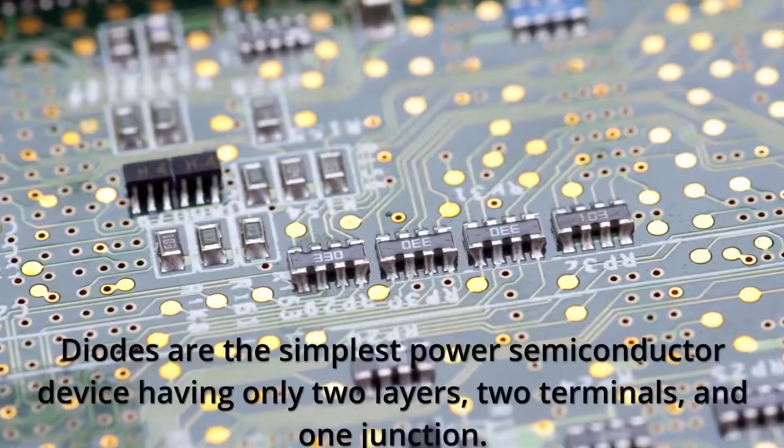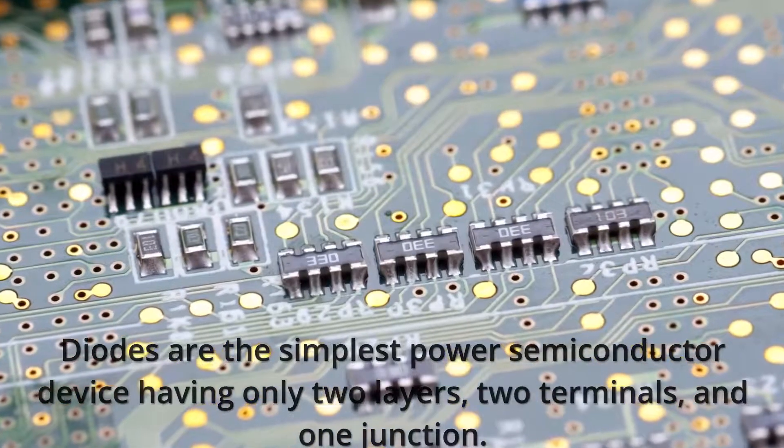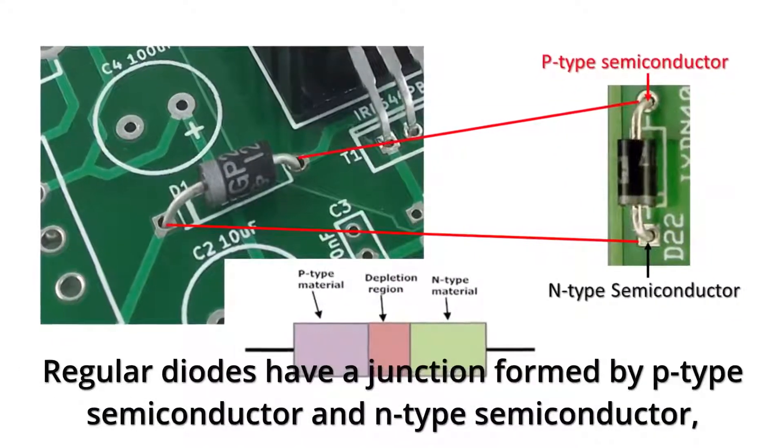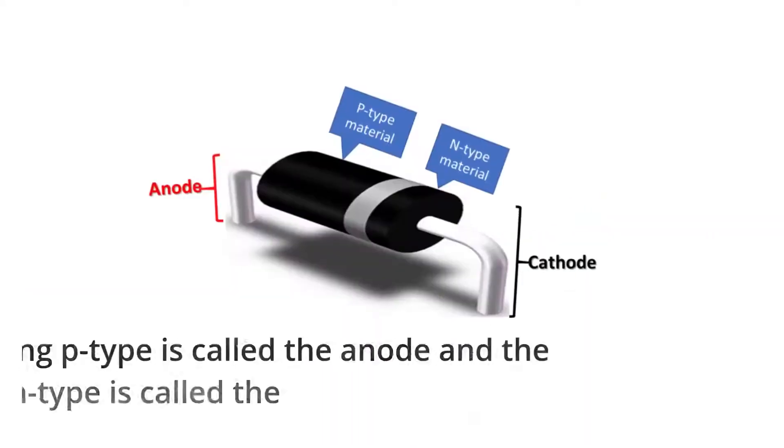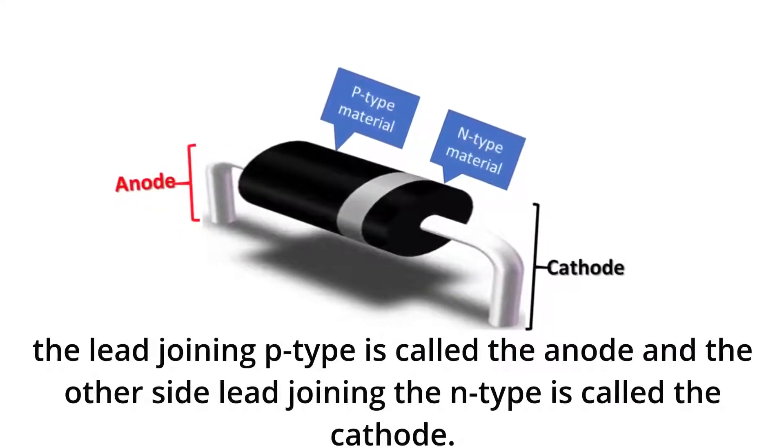Diodes are the simplest power semiconductor device having only two layers, two terminals, and one junction. Regular diodes have a junction formed by P-type semiconductor and N-type semiconductor. The lead joining P-type is called the anode and the other side lead joining the N-type is called the cathode.